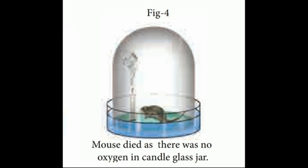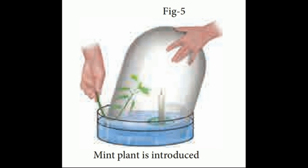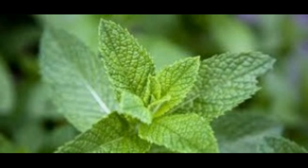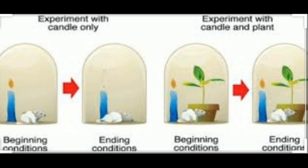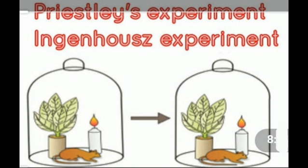It was clear that oxygen was necessary for survival. In the next step, he gently lifted the jar and placed a small plant inside. The plant is inserted into the bell jar while it is submerged in water, ensuring outside air does not enter the jar. The plant, being a living thing like the mouse, you would expect it would die too. Instead, the plant survived. After placing the small plant, he relit the candle and it continued to burn.